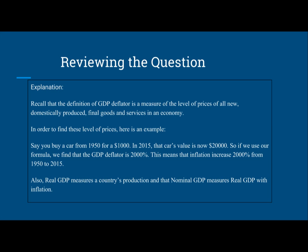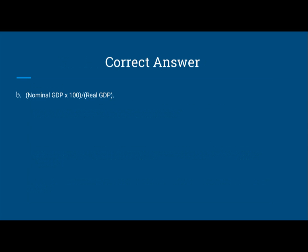So if we use our formula, we find that the GDP deflator is 2,000%. This means that inflation increased 2,000% from 1950 to 2015. Also, real GDP measures a country's production, and nominal GDP measures real GDP with inflation. So the correct answer for this problem is B: Nominal GDP times 100 divided by real GDP.